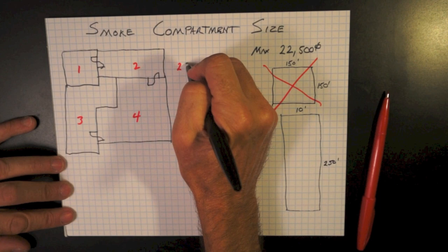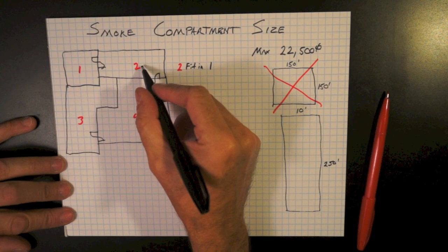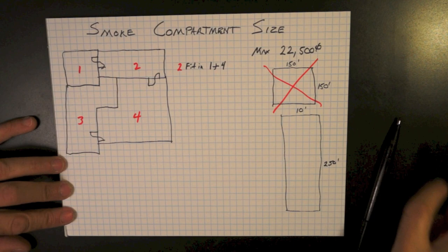Another limiting factor of smoke compartment size is the fact that everyone in Smoke Compartment 2 has to fit in Smoke Compartment 1 because there's communicating doors. So everyone in 2 must fit in Smoke Compartment 4.